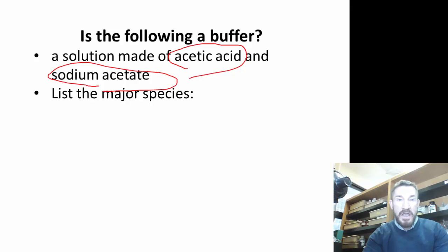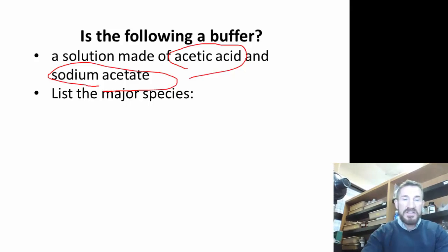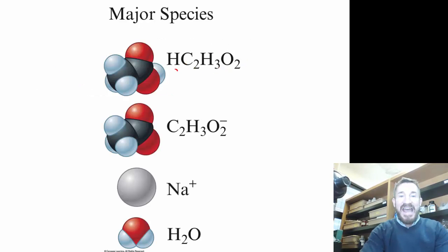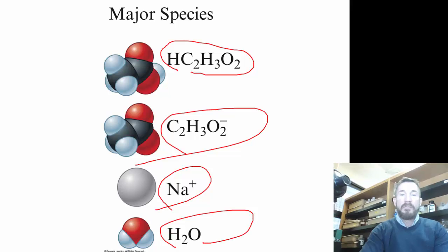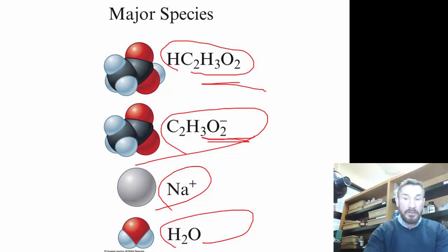Let's list the major species because I love listing major species. How many do you think there are? Hopefully you said four. We have acetic acid - it is not split up because it's a weak acid - the acetate ion, the sodium ion, and water.